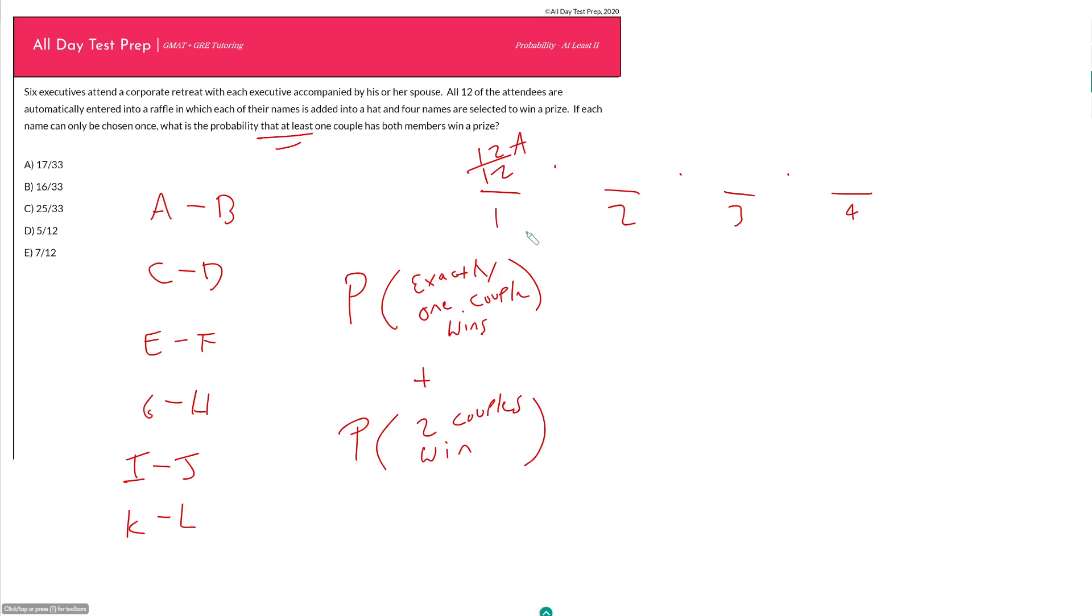The probability that this first person is a person is just 12 out of 12 or one. Now it is once you get to the second person that you can start thinking about our couple probability. Let's say the first person selected was A. It could have been any of our 12 people. Let's say we chose A here. So if we want the probability of, for example, exactly one couple wins, now we're looking for B to be chosen. But here is where we start running into an issue, because B does not have to be chosen here.